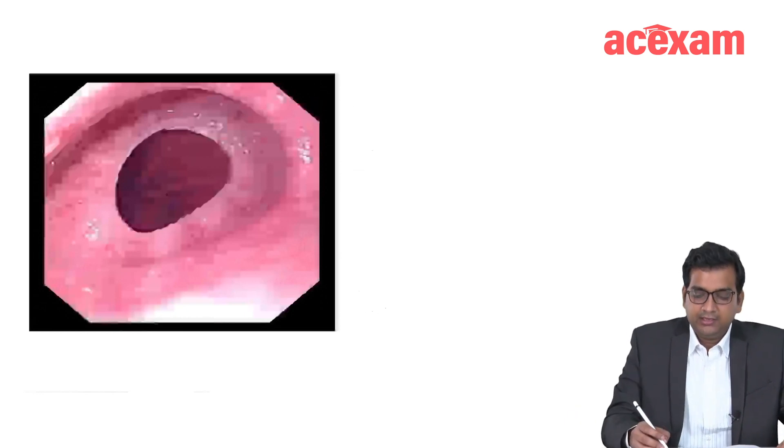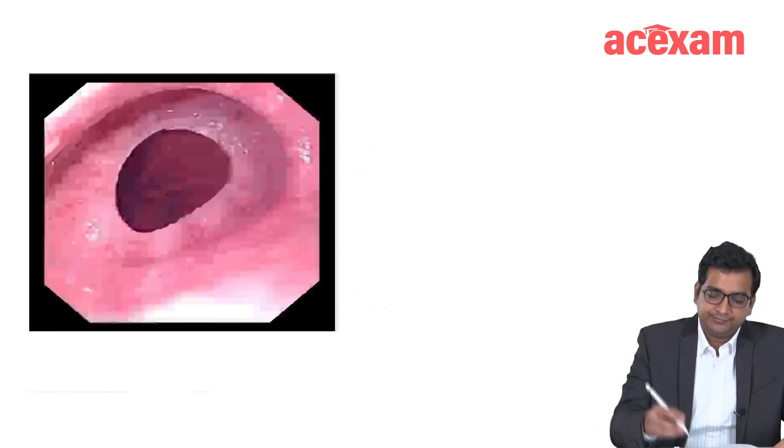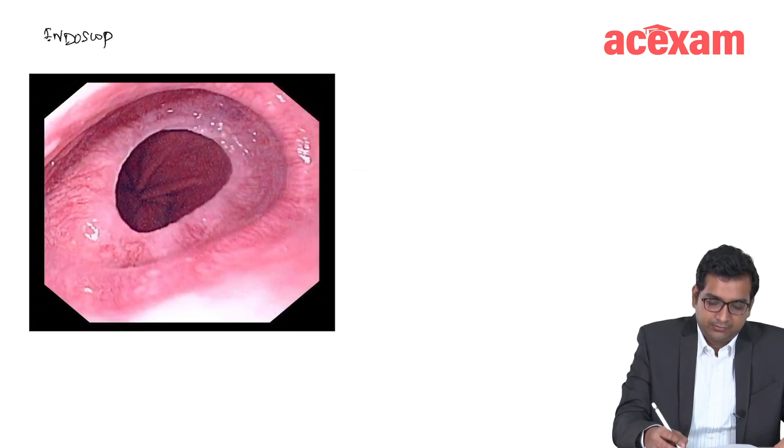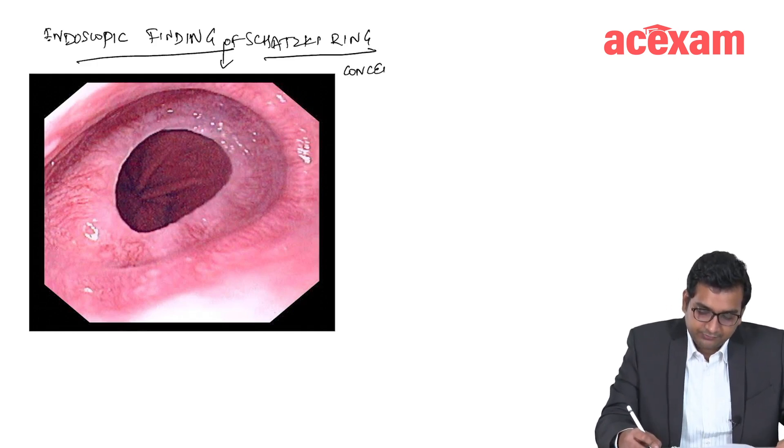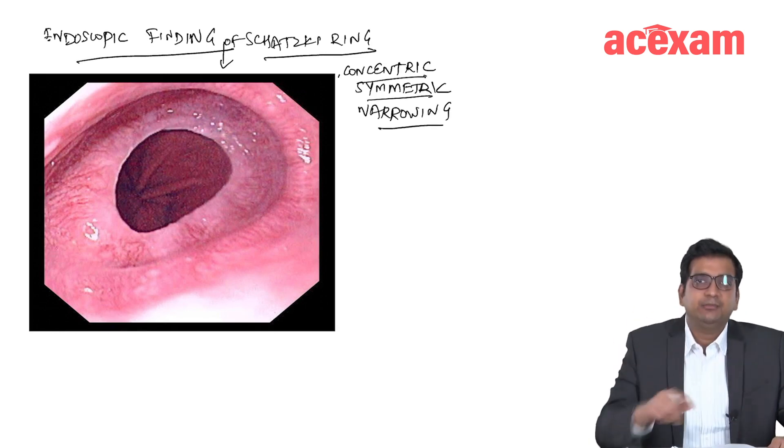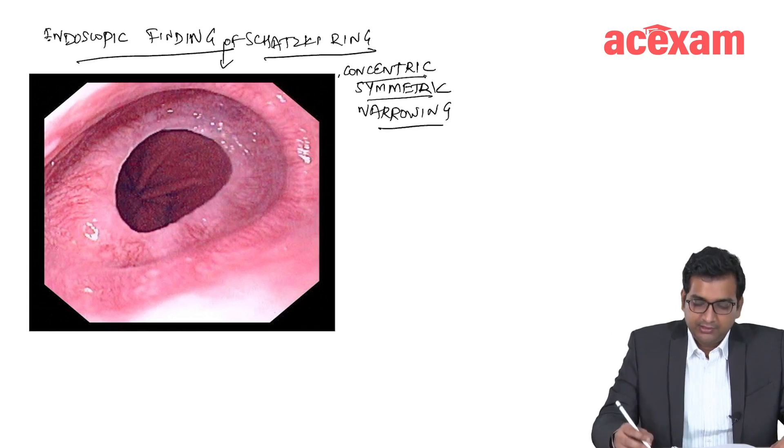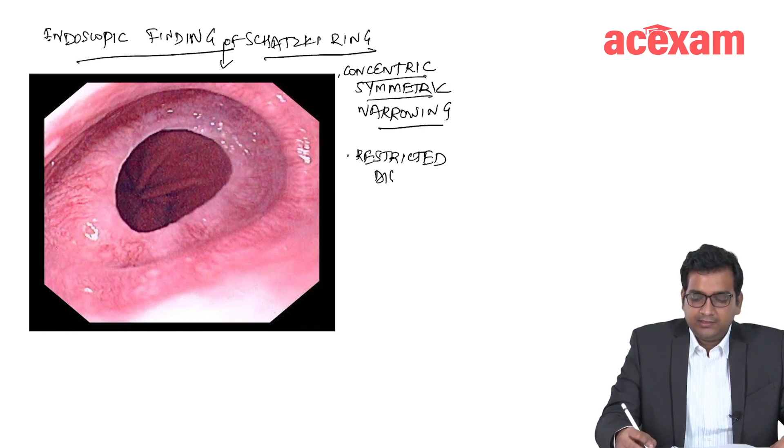This is the endoscopic finding of Schatzky ring. There is a concentric symmetric narrowing, so there will be a concentric symmetric narrowing and there will be a restricted distensibility.